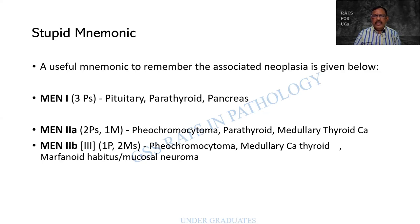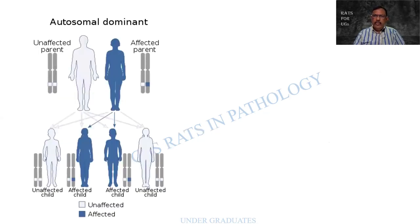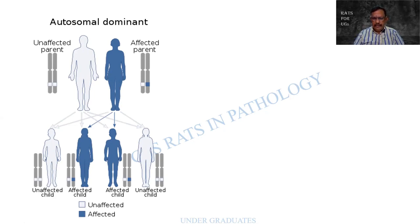The general mode of inheritance for MEN syndrome is autosomal dominant. When one parent is affected, it is passed on to the children. Both male and female children can be affected, so 50% of the children are affected. It may be called MEN's syndrome, but it affects women too.